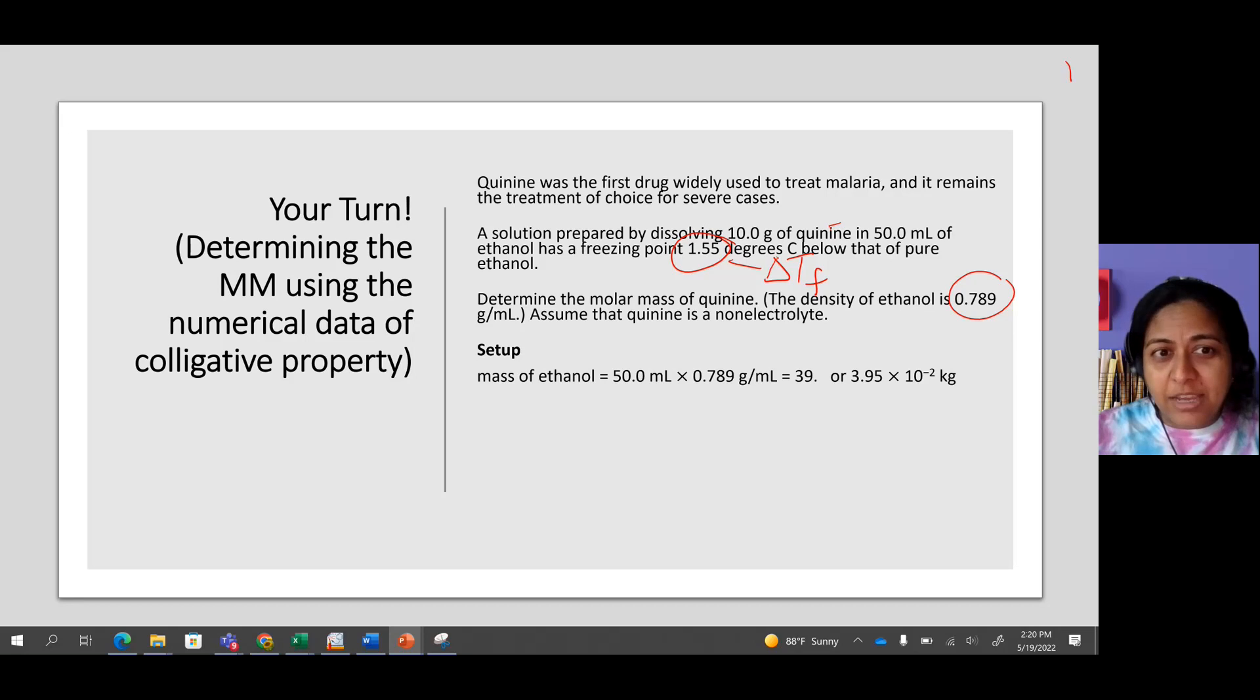We need the mass, right? We have the volume, so we can calculate the mass. Assume that quinine is a non-electrolyte. So what does that mean? i equals 1, so we don't need to put the i as the coefficient because it's just 1.